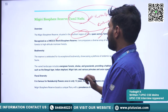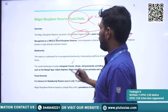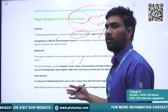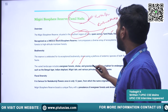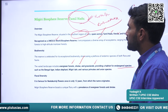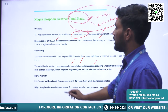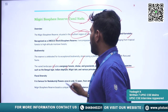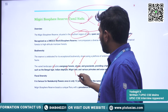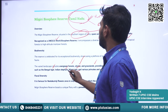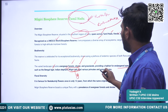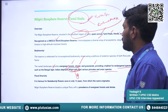When we see the biodiversity of Nilgiri, it includes evergreen forests, sholas — which are a kind of forest — and grasslands, providing habitat for endangered species such as the Bengal tiger, Indian elephant, Nilgiri tahr, and various primates and avian species.